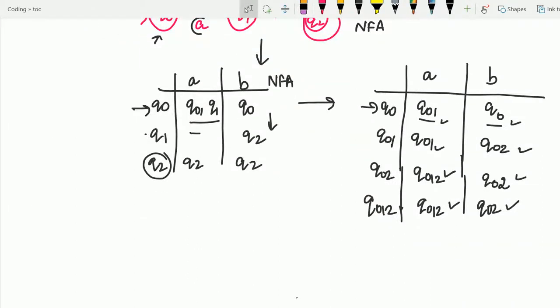So this is the DFA we are getting, but this need not be minimal. It can be minimal, but it is not necessarily minimal. So for that, you have to convert it into the minimal DFA. For the conversion of minimal DFA, you have to do the following steps. That is minimization algorithms you are following in order to do that. So let's do the minimal algorithm.